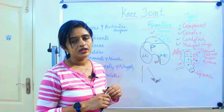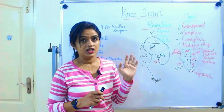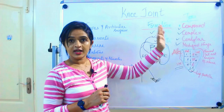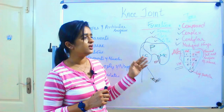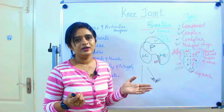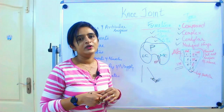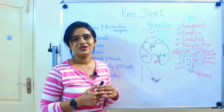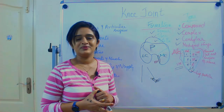To summarize, we discussed the subheadings for studying a joint, the types of the knee joint and why each term applies, the bones forming the knee joint, and the articular surfaces of the femur and patella. In the next session, we will talk about the articular surface of the tibia and the menisci, which is a bigger topic. Please watch this session, let me know your thoughts, and if you haven't subscribed yet, please do subscribe. Thank you.